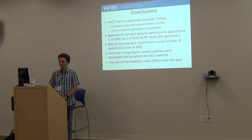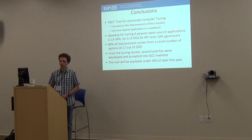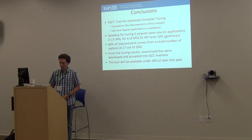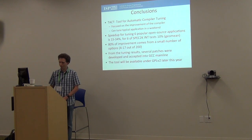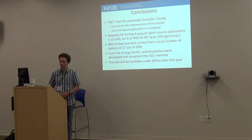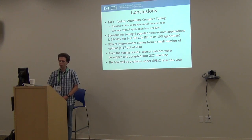We have presented TACT, a tool for automatic compiler tuning focused on compiler development rather than obtaining a long obscure option string. The results are stable across data sets and can be used to improve the compiler. It can speed up applications in the range of 15 to 30 percent, comparable to profile-guided optimizations, and speeds up SPEC 2000 by 10 percent on average. 80 percent of improvement comes from a very small, manageable number of options. From this tuning we developed a few small fixes now in the mainline, and the tool will be released under an open source license later this year.